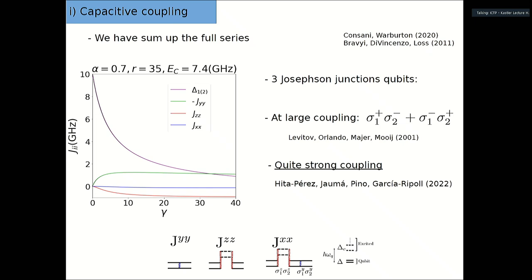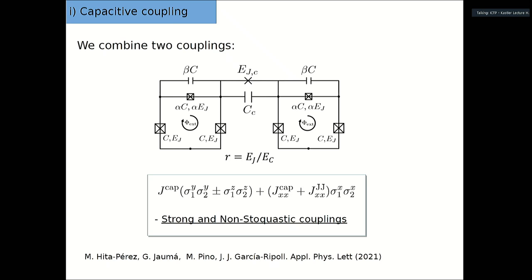We have the qubit gap of the same order as the amplitude, so we are able to compute from first principles that you get YY in first order, leading to this model. We are also able to show there is quite a strong coupling. Our theory gives an intuitive explanation: in first order, the qubits interact but stay in the qubit subspace, giving sigma YY. In second order, qubit-qubit pairs can go up to excited states and come back, giving sigma ZZ. There are also processes giving sigma X, so JX is always non-zero. Joining with a tunable Josephson junction, you can build models with sigma XX and also sigma-plus sigma-plus, sigma-minus sigma-minus, which is non-stoquastic.